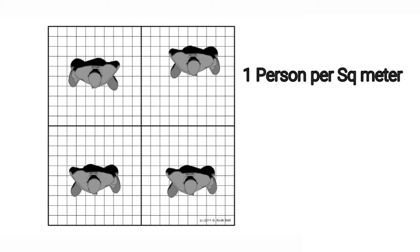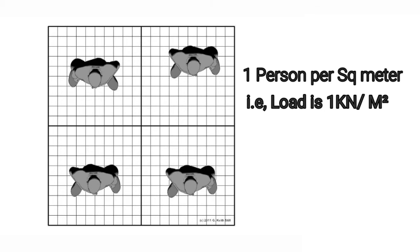This pic illustrates 1 person per m². That is, here the load on the floor is 1 kN per m². Here there are 4 boxes, each area is 1 m².